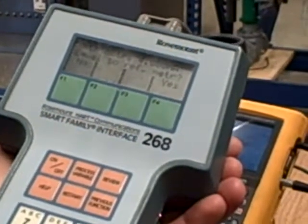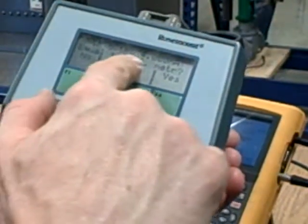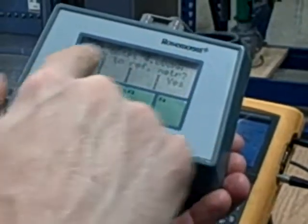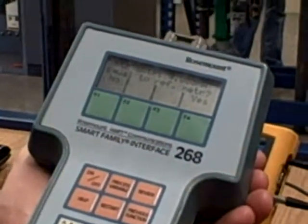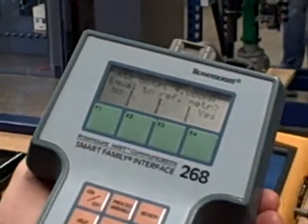Then it asks, is the transmitter output 4.00 milliamps equal to reference meter? Yes or no? In other words, it did an adjustment and it's asking, confirming once again, is it equal? Well, it is. So I hit yes.